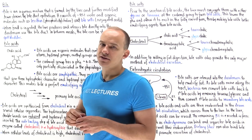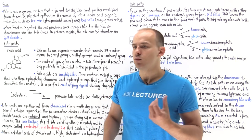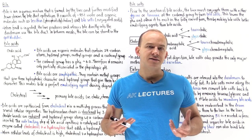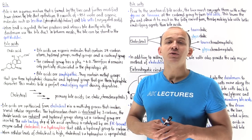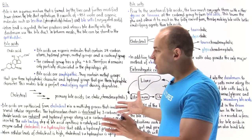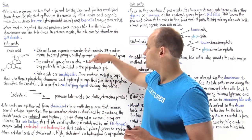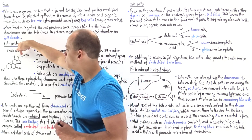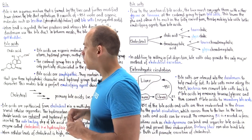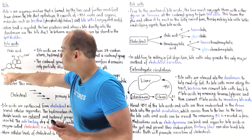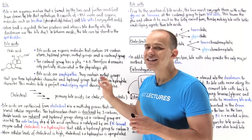Bile acids are synthesized from cholesterol via a multi-step, multi-organelle process, ultimately converting cholesterol into primary bile acids. The two major primary bile acids are cholic acid and chenodeoxycholic acid. In this process, three carbon atoms are removed from the hydrocarbon chain — cholesterol has 27 carbons while primary bile acids have 24. A carboxyl group is added at the end, the rings are reduced, and hydroxyl groups are added.